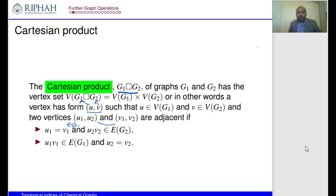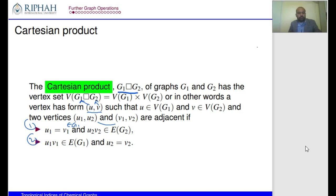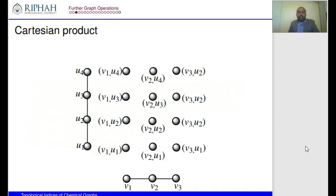Remember there are two types of edges in the Cartesian product. This is important when we talk about topological indices defined on the edge set. There are two types: one from the first condition and one from the second condition. This is the definition of the Cartesian product; in the next slide we explain this with an example.